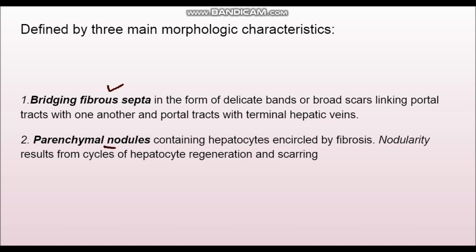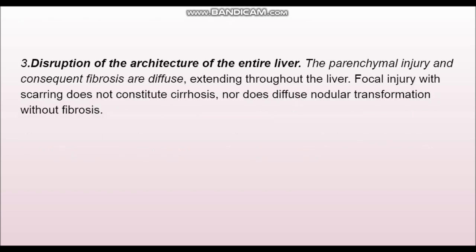The second criterion is the presence of nodules. These nodules are formed as a result of hepatocyte regeneration and scarring. Due to chronic inflammation, hepatocytes die; there is ongoing fibrosis, hepatocytes regenerate, and nodules are formed. The third criterion is that the entire liver should be involved — the disruption of architecture of the entire liver by fibrosis and nodule formation must be present.